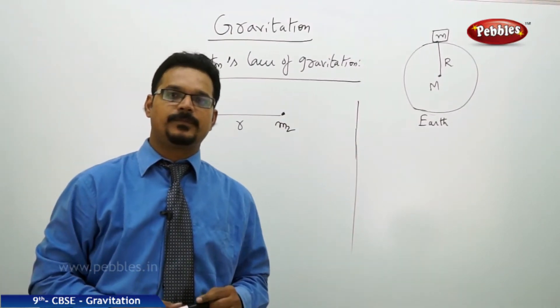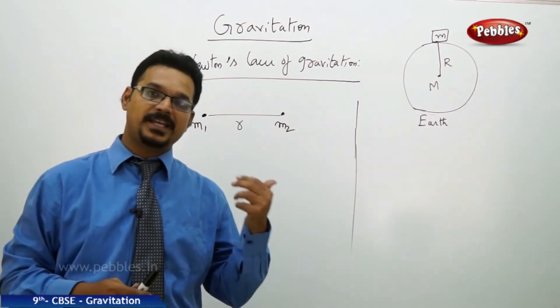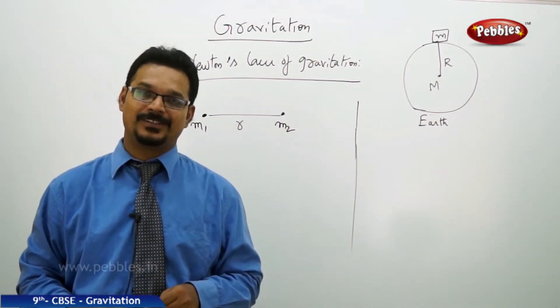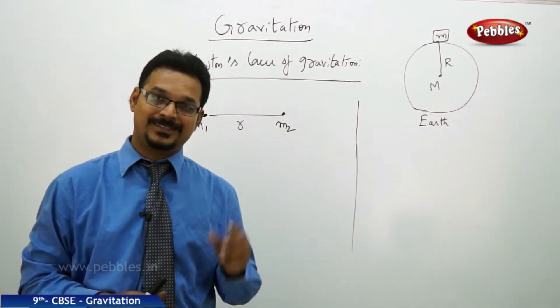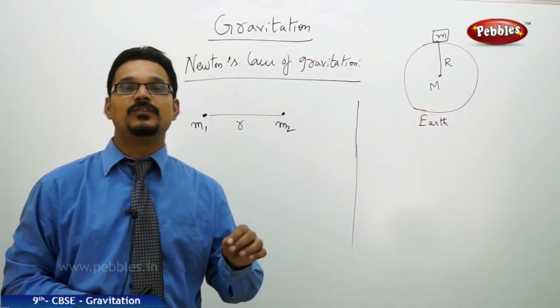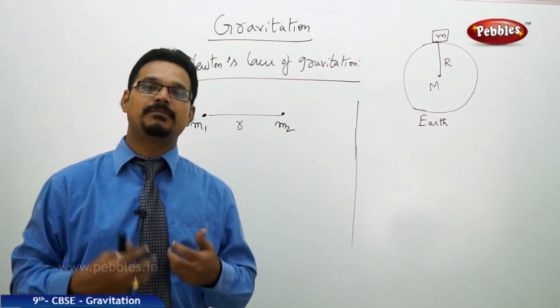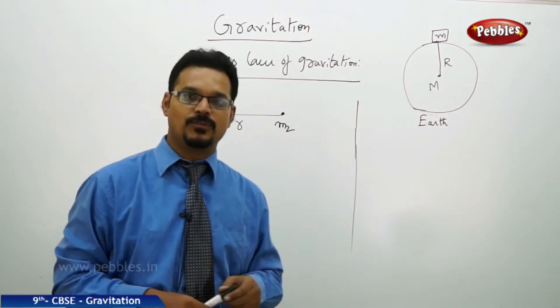To know about what is gravitation, we need to go back in time to Newton's age, because Newton was the first scientist, physicist, mathematician, and philosopher who actually showed the experimental approach to sciences. He wrote a famous book.